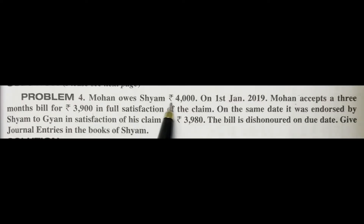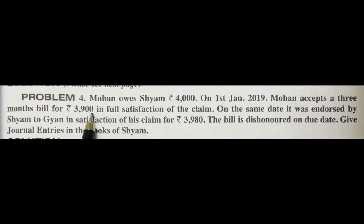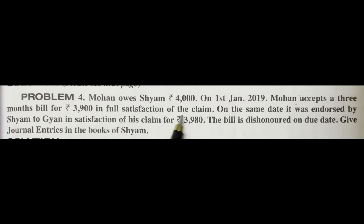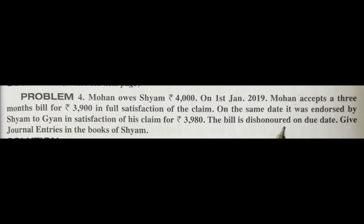Mohan owes Sham 4,000 rupees. On 1st January 2019, Mohan accepts a 3-month bill for 3,900 rupees in full satisfaction of the claim. On the same date, it was endorsed by Sham to Gnan in satisfaction of his claim for 3,980 rupees. The bill was dishonored on the due date. The question asks for due journal entries in the books of Sham.